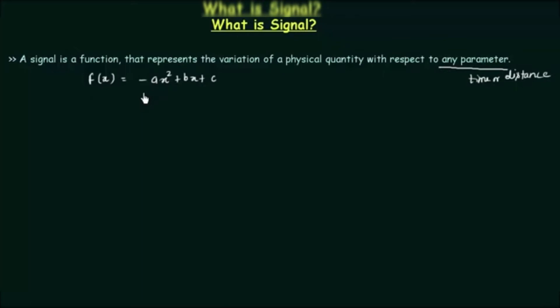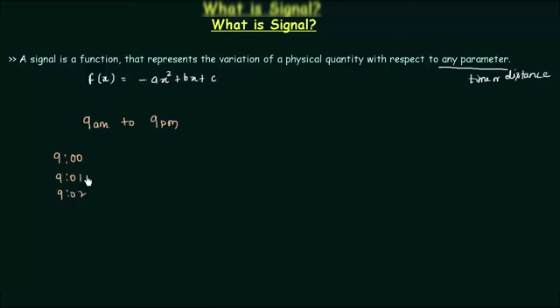To implement this function in a daily life example, let's take a boy who will go to a particular place and measure the temperature from morning 9 a.m. to evening 9 p.m. He will stand there with his thermometer and measure the temperature every one minute. So at 9 a.m. it is 27°C, at 9:01 it is 27.5°C, and so on for different times until 9 p.m.